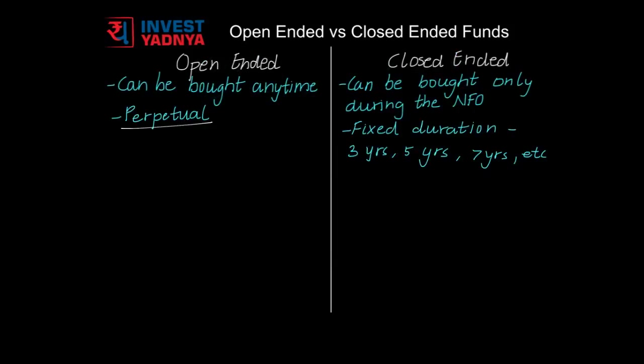Open-ended funds are perpetual kind of funds — once the fund is launched, it continues to exist without an end date. Whereas closed-ended funds come with a fixed duration; they exist for 3 years, 5 years, 7 years, etc. They usually come with a theme of investment.